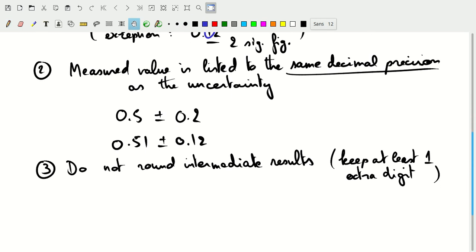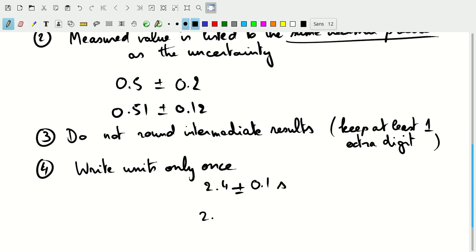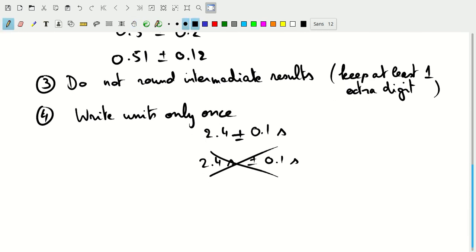Other rules: write the units only once. So if you have something like 2.4 plus or minus 0.1 seconds, don't write this as 2.4 seconds plus or minus 0.1 seconds. That's not how we write this.